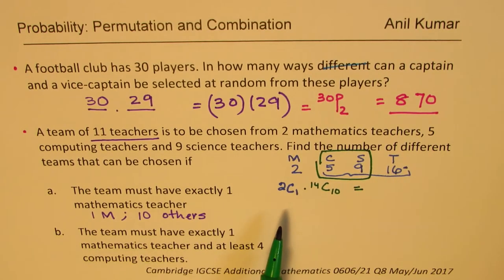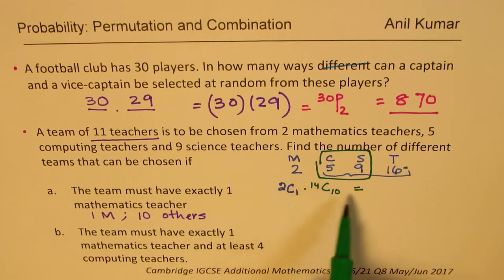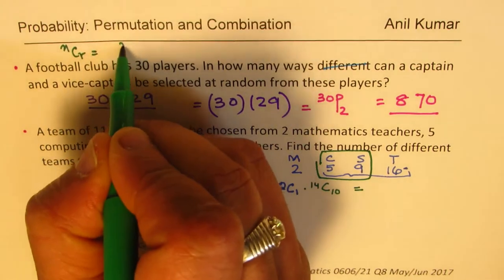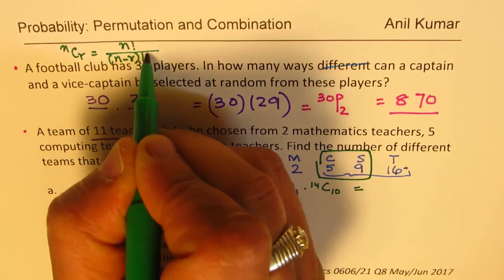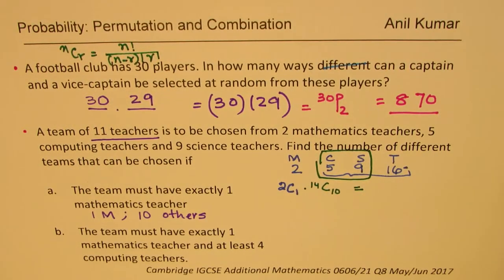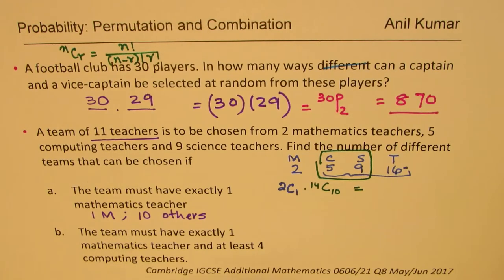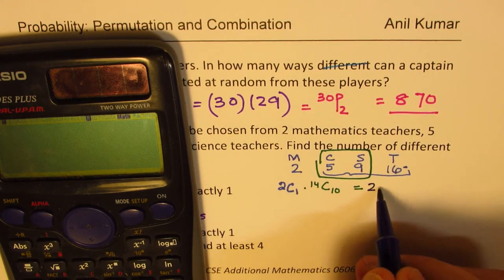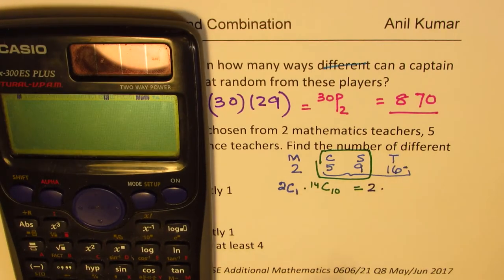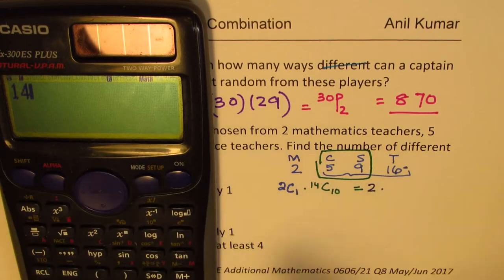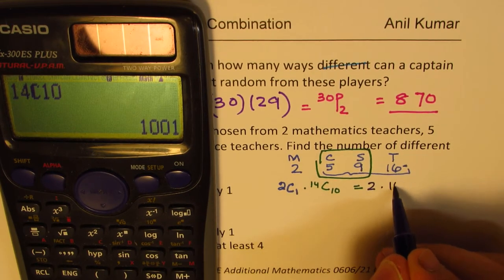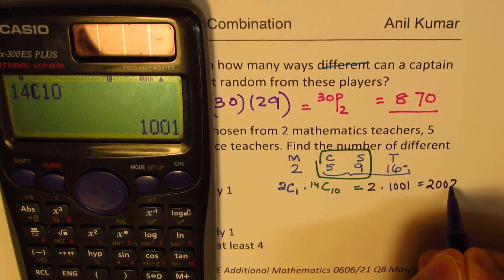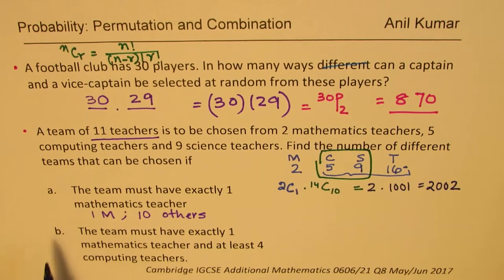As far as the value of C is concerned, in general if we have nCr, it is n factorial over n minus r factorial times r factorial. At times calculator is not allowed, so that could be sometimes a constraint, but normally calculator is allowed for such questions. So let's calculate. So here we get 2 times 14C10. Let's calculate with calculator, so we have 14 and combination 10 is 1001, so that is 2 times 1001, and that gives you 2002. That becomes your solution for part a.